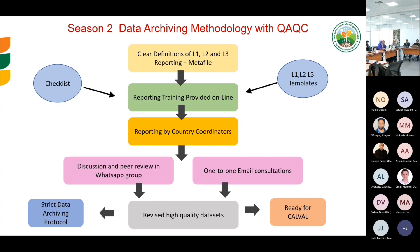We try to fix the data if there are errors and then regenerate L1, L2, and L3 data. We then archive, developing high-quality L1, L2, and L3 datasets ready for calibration and validation for remote sensing purposes or with crop models.